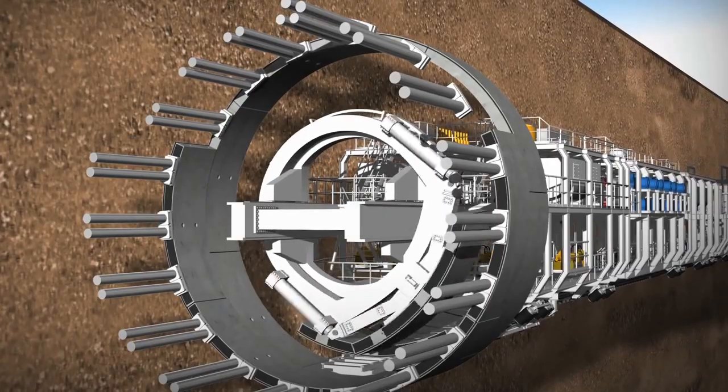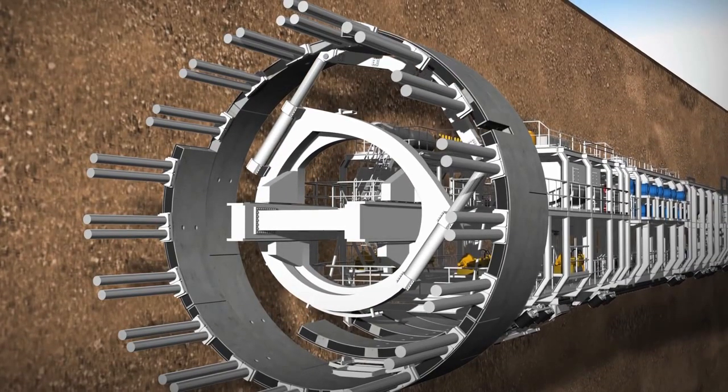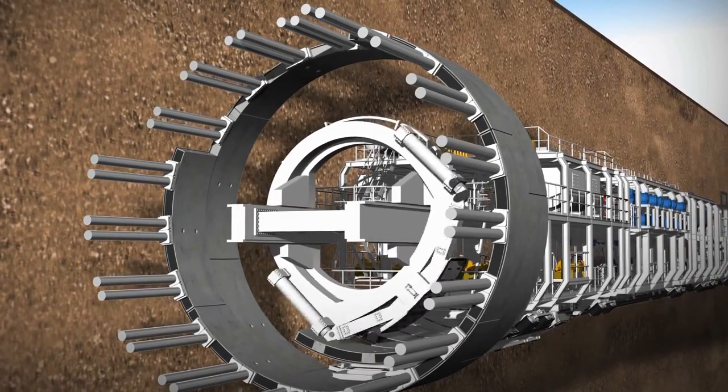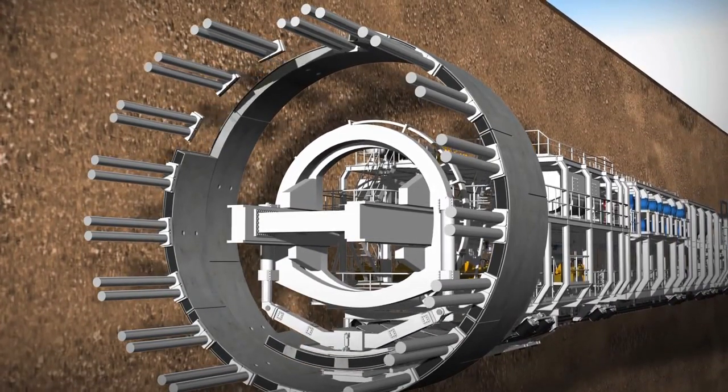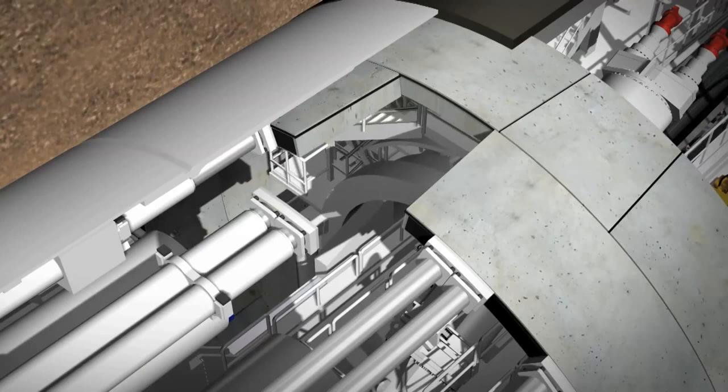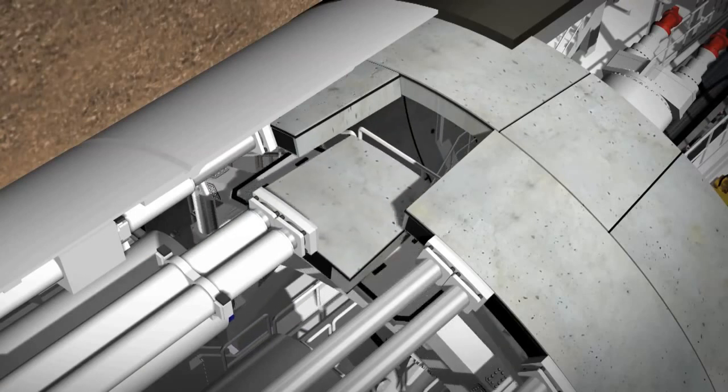The segments are positioned with millimetre precision and held in place by cylinders before being finally bolted into position. The conical keystone is put in from the front to complete the lining ring.